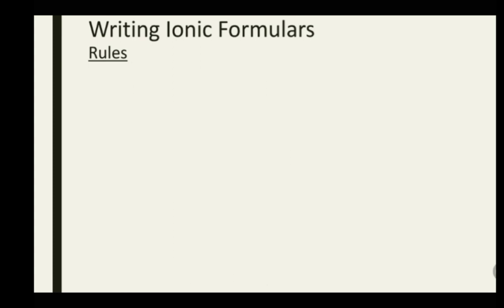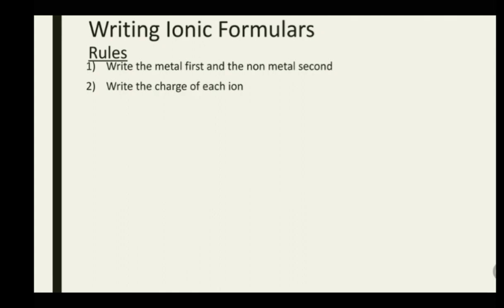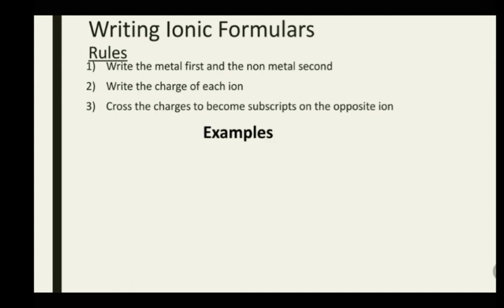Now we'll begin writing the ionic formulas, or chemical formulas, of some binary compounds. We have three rules: first, write the metal first and the non-metal second; second, write the charge of each ion; and finally, cross the charges to become subscripts on the opposite ion. Let's consider some examples — we have sodium and chlorine.